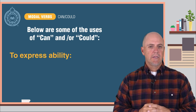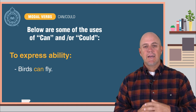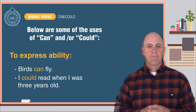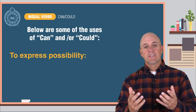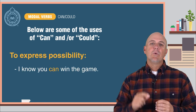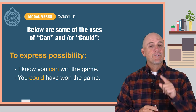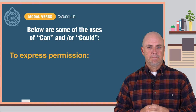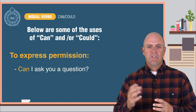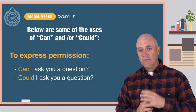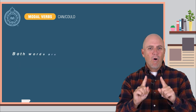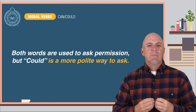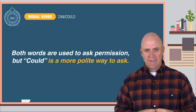To express ability: Birds can fly. I could read when I was three years old. To express a possibility: I know you can win the game. You could have won the game. To express permission: Can I ask you a question? Could I ask you a question? Both words are used to ask permission, but could is a more polite way to ask.